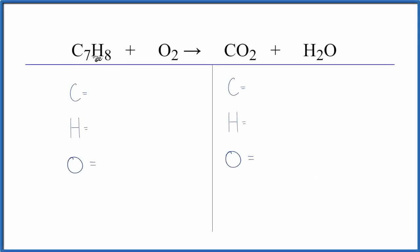To balance this equation, C7H8 plus O2, we'll count the atoms up first on each side of the equation and then we'll balance them. We'll try to make them equal.